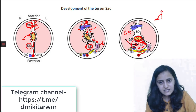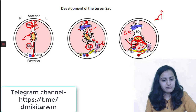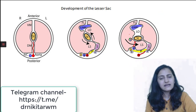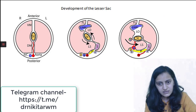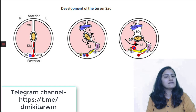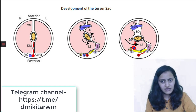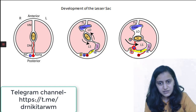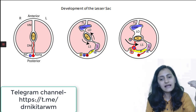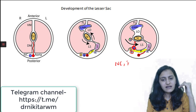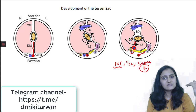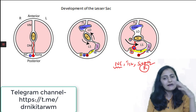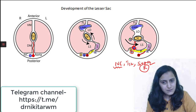The greater sac and lesser sac communicate through a foramen called the epiploic foramen. The posterior border of this epiploic foramen is formed by the inferior vena cava. In relation to that you also have the right kidney area and the right suprarenal gland. So the posterior relations are IVC, T12 vertebra, and the right suprarenal gland. An easy way to remember: IVC is on the right side, so it is the right suprarenal gland, not the left.